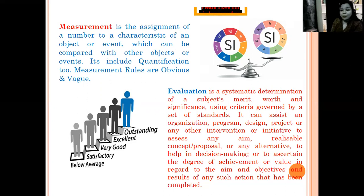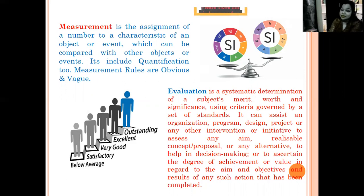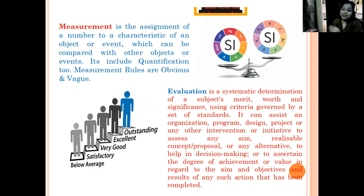In measurement, we measure the qualities of the object rather than the straight object itself, and quantification is also involved. Evaluation is slightly different — in evaluation, there is a qualitative judgment. For example, we observe a typist and find that the typist types 100 words per minute — that is the measurement. And because of writing 100 words per minute, this typist is Grade A — that is the evaluation.